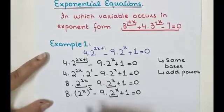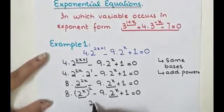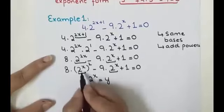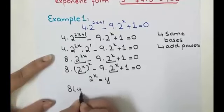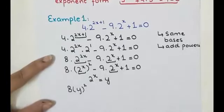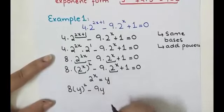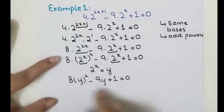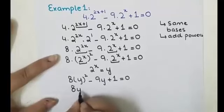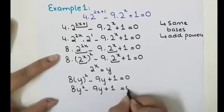Now we have the (2^x)^2 term and the 2^x term. We substitute y = 2^x throughout the equation, replacing 2^x with y. This gives us 8y^2 - 9y + 1 = 0, which is now a quadratic equation we can solve.